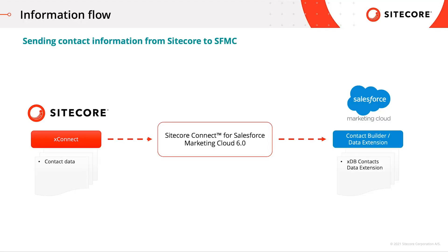When sending contact information from Sitecore to Salesforce Marketing Cloud, the connector takes XConnect contact data from Sitecore and then pushes it into the Contact Builder under data exchange extensions and creates the contact data into a new custom data extension called XDB Contacts.